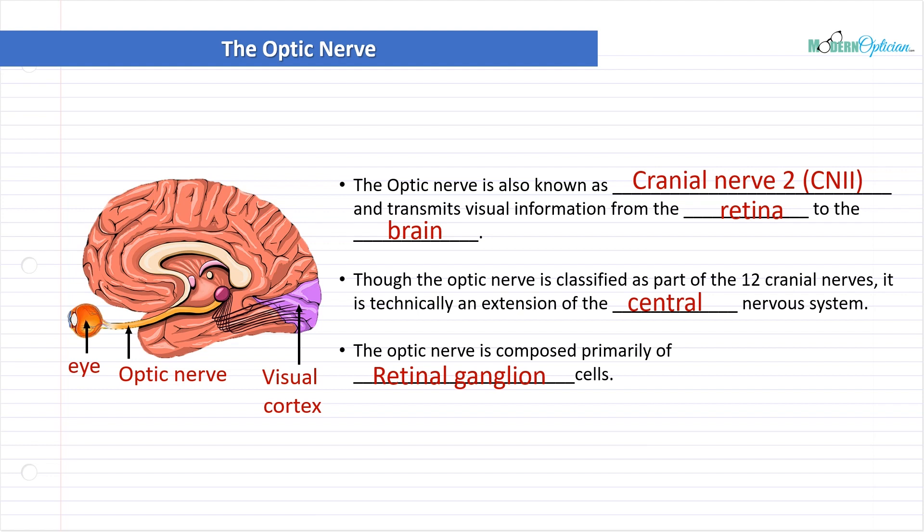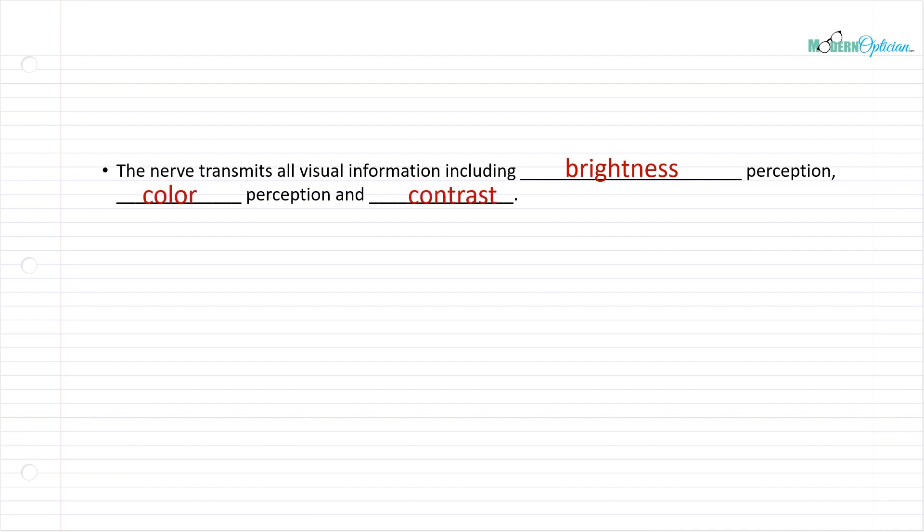So that's the simple concept here. Let's go a little bit more into detail. Now, the nerve transmits all visual information, including brightness perception, color perception, and contrast. It does it all. When it comes to vision, the optic nerve is responsible for taking that image created through light and turning it into something chemical that we can actually experience in our brain.